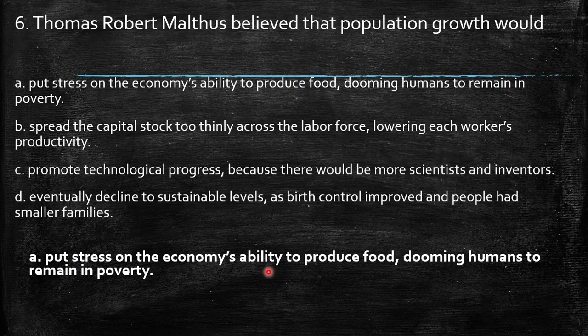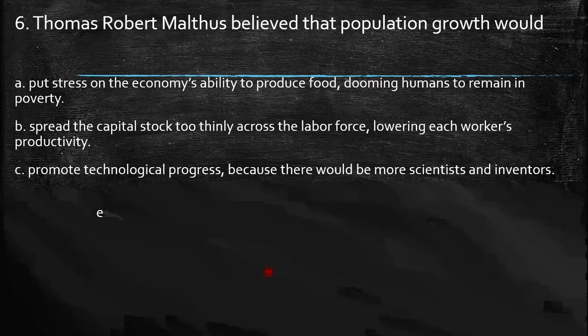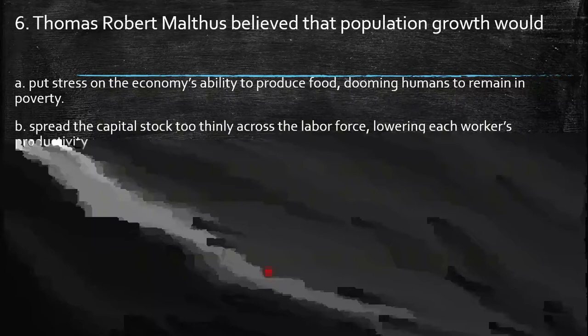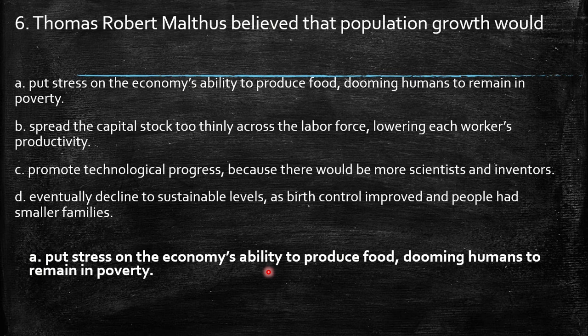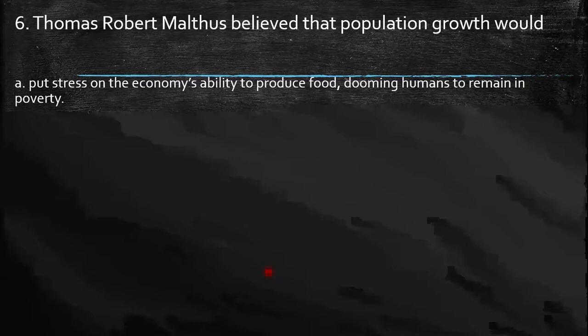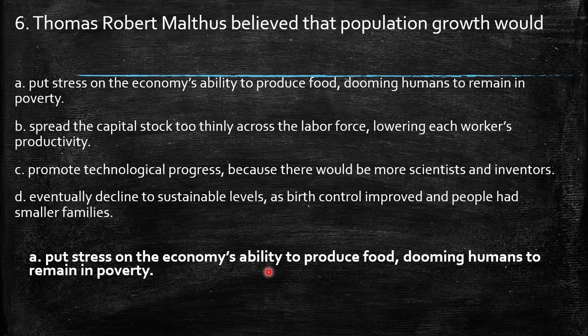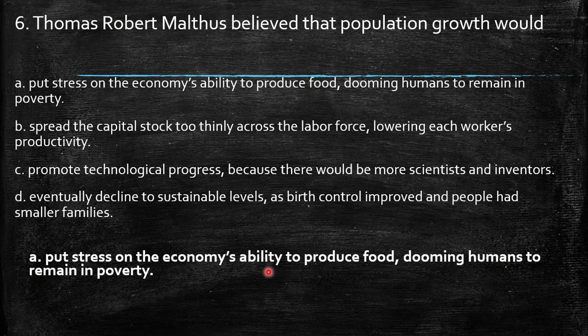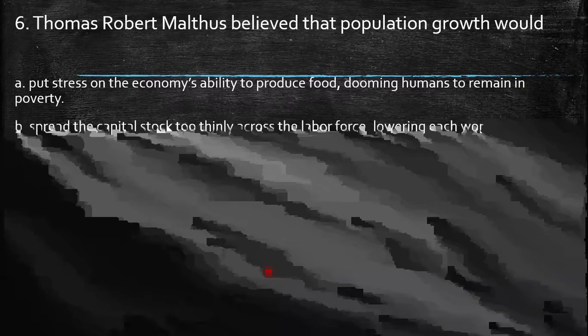Sixth question: Thomas Robert Malthus believed that population growth would do what? The possible answers are: put stress on the economy's ability to produce food and cause humans to remain in poverty; spread capital stock too thinly lowering workers' productivity; promote technological progress because there would be more scientists and inventors; or eventually decline to sustainable levels as birth control improved. Remember, Malthus's idea is pessimistic about the future of population — overpopulation would put stress on the economy's ability to produce food, causing humans to remain in poverty due to lack of resources. I hope this has helped — see you in the next video, bye bye.